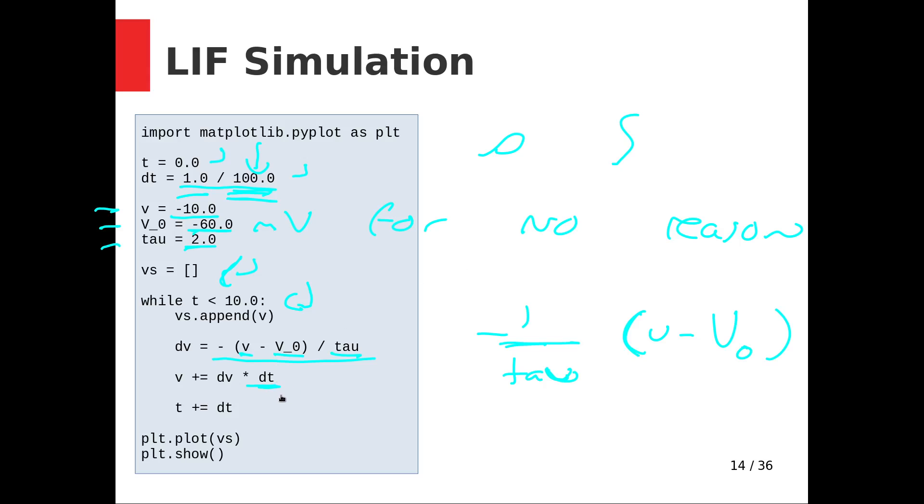This is the direction of change, but I need to multiply it by how tiny our time step is. Then I add that to the voltage, and then I add my little time step to t so I can keep track of it. Once this test is false, we've finished our simulation and I can plot our voltages.